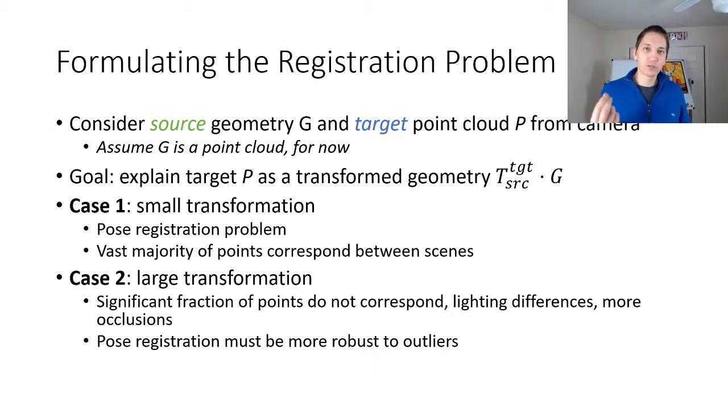Now we'll look briefly at two different types of ways to solve the registration problem, the second one which will be a bit more useful for object pose recognition. The first one is in which the transformation between the source and the target frame are small. This is a case in which the vast majority of the points are going to correspond between the scenes and so we can use essentially just local methods to figure out what this transformation should be. In the case where the transformation is larger then we have a significant fraction of the points which don't correspond. We may have lighting differences. We also may have occlusions from the different scenes and so our pose recognition actually has to be more robust to outliers.